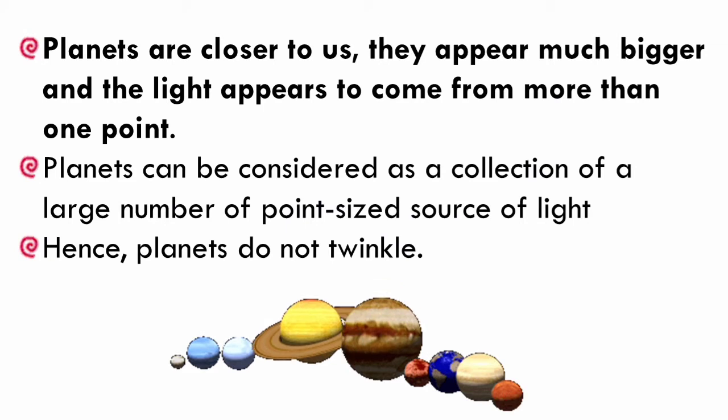So, the dimming effect produced by some of the point sources of light in one part of the planet is nullified by the brighter effect produced by the point sources of light in its other part. Thus, on the whole, the brightness of the planet always remains the same and it does not appear to twinkle.